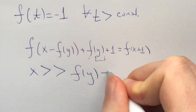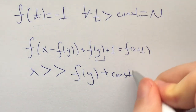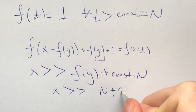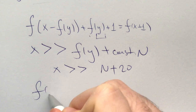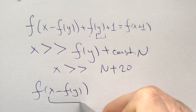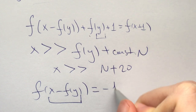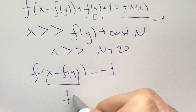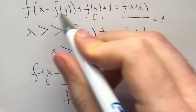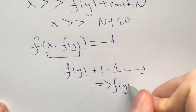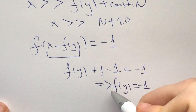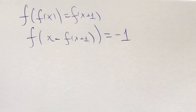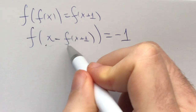We fix y to be some integer and pick x a lot bigger than f of y plus the constant n, and also bigger than n plus 20. That means f of x minus f of y will equal negative 1, and f of x plus 1 will also equal negative 1. So we get f of y plus 1 minus negative 1 equals negative 1, i.e., f of y equals negative 1. So the constant function f equals negative 1 is a solution when f is not injective.